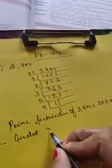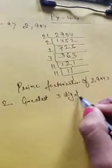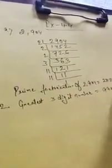Next question, question number 2: write the prime factorization of the greatest 3-digit number. You know the greatest 3-digit number. The greatest 3-digit number equals 999.